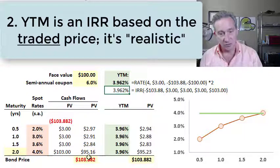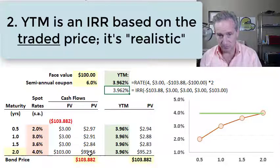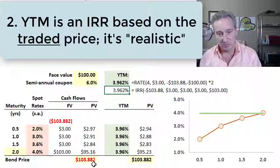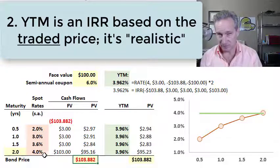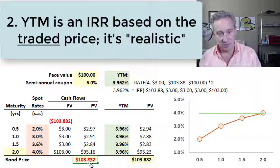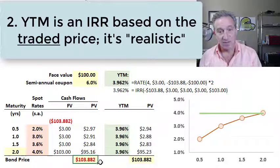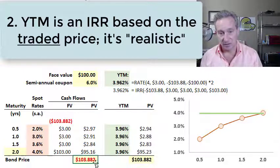Closely related to this, the most important input is the bond's price or the initial cash flow. We've used here a theoretical bond price, pricing the bond by spot rates. But the idea with the yield to maturity is that it's based on whatever the traded price is.